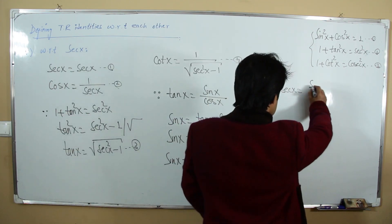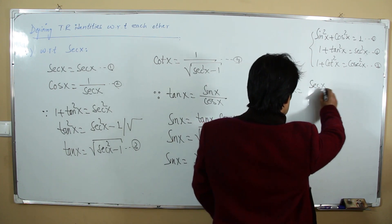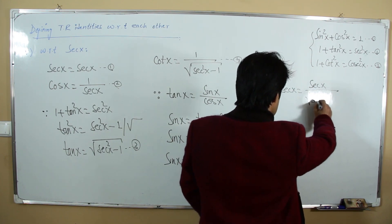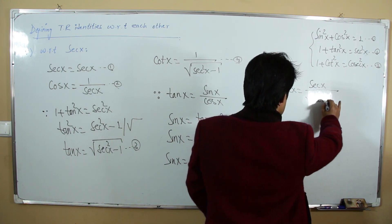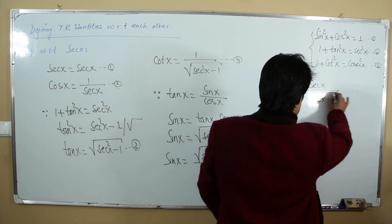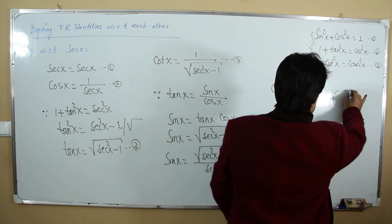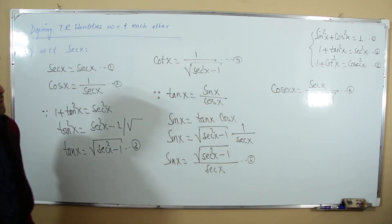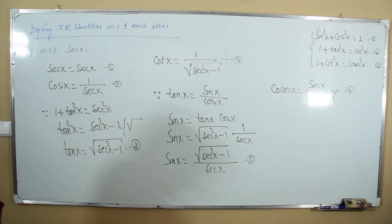Cosecant is the reciprocal of sine: csc x = sec x / √(sec²x - 1). We have now proved 30 relations.